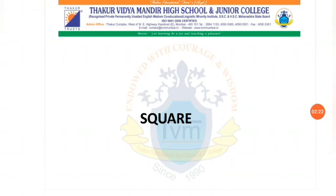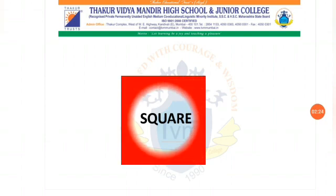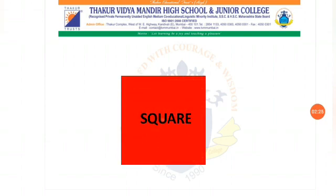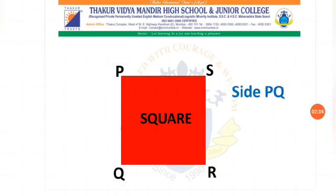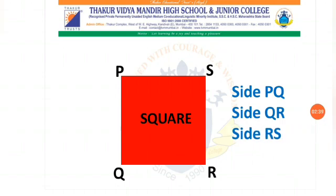Here we go with the next figure. This is a square. It has four vertices and four sides. Let's write its names: side PQ, side QR, side RS, and side PS. So a square has four vertices and four sides.